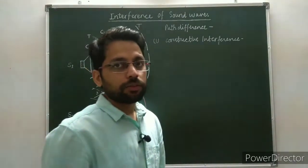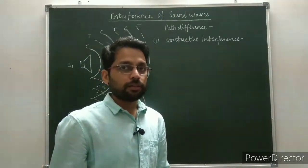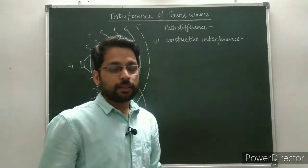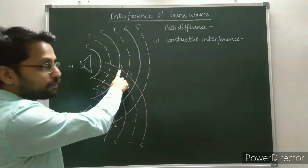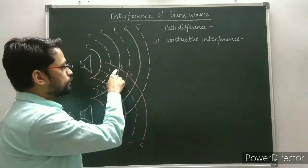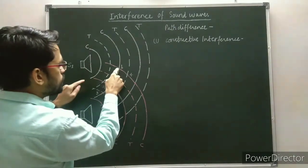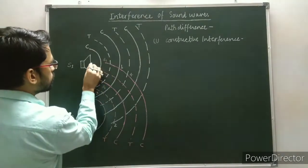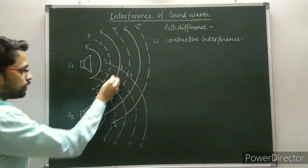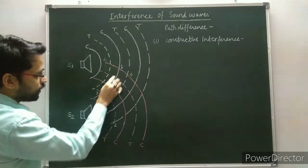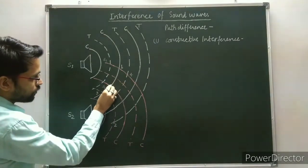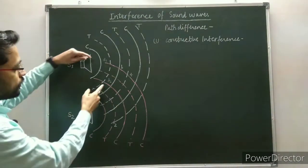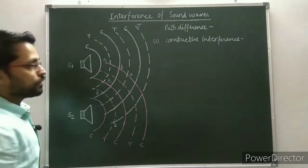The locations of the points of constructive interference and destructive interference are based on the path difference. Path difference is the difference between the distances of the chosen point from the sources. If I choose point 1, then the distance of this point from source S1 is D1, and D1 dash is the distance of point 1 from source S2. The difference between these two distances is known as the path difference for this point.